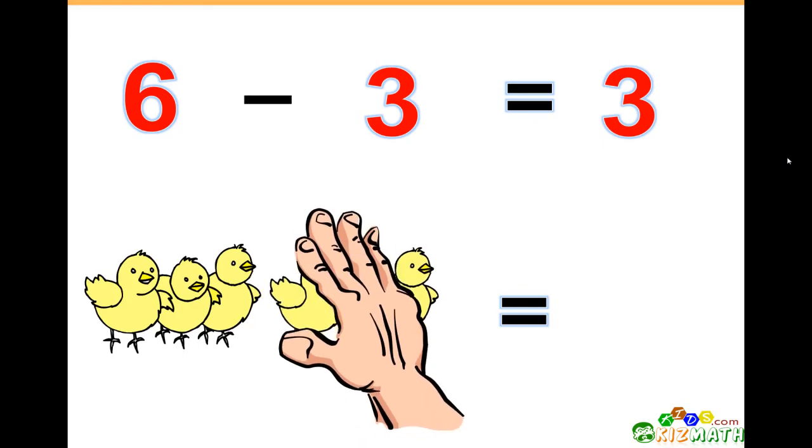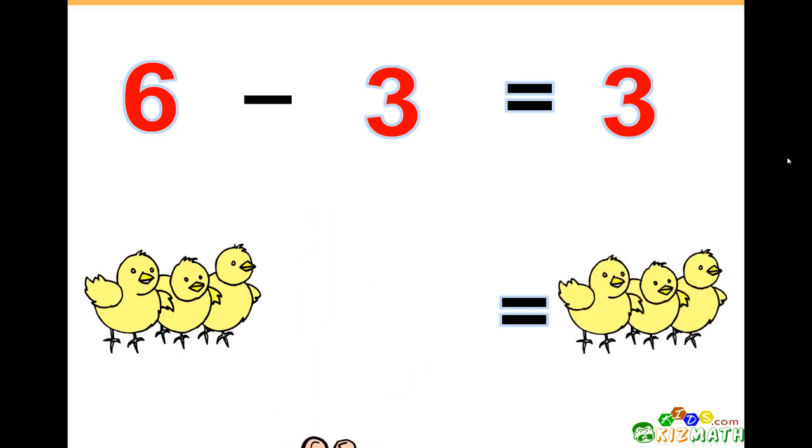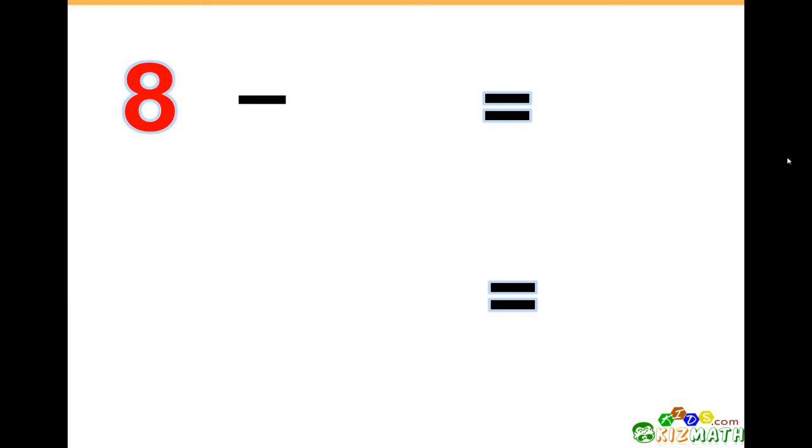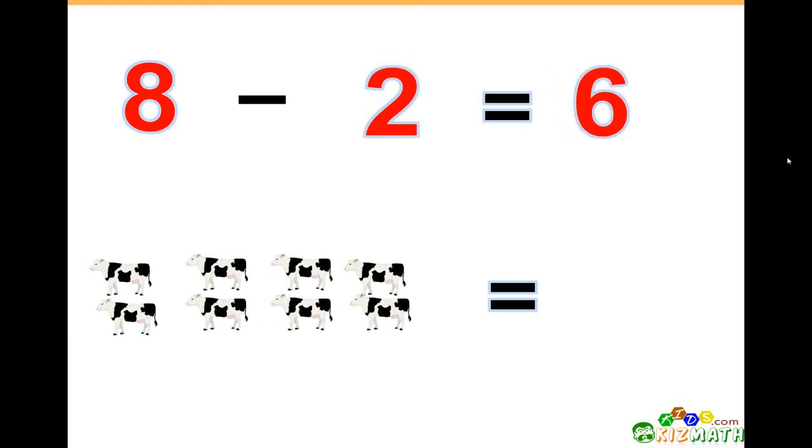8 minus 2 equals 6. If we have eight cows and we take away two cows, there are only six cows left.